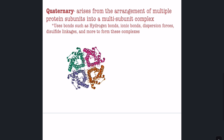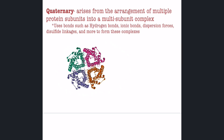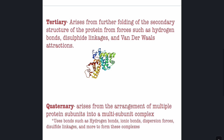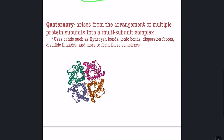Essentially, a quaternary structure just takes multiple tertiary structures to form a multi-subunit complex. When proteins are formed within the cell, sometimes a protein in the tertiary structure isn't functional by itself — it has to be bonded with another structure to be functional and of use in the cell, which is what happens with the quaternary structure.